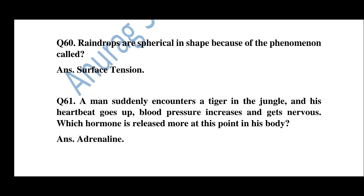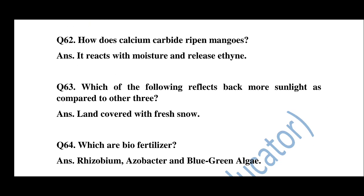Question number 61: A man suddenly encounters a tiger in the jungle and his heartbeat goes up, blood pressure increases, and he gets nervous. Which hormone is released more at this point? Question number 62: How does calcium carbide ripen mangoes? It reacts with moisture and releases ethylene.